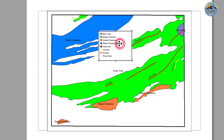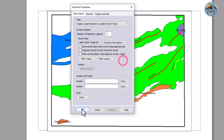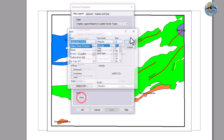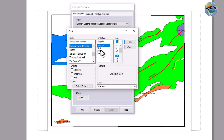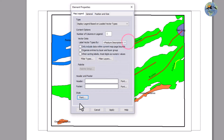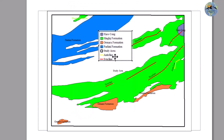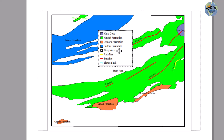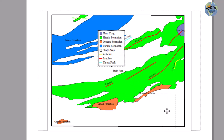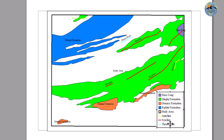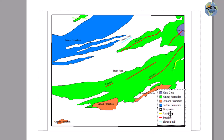Now double-click on the legend or go to Properties. You can change the properties and also change the font — I will make it size 12, regular. Click OK again. You can place the legend here.